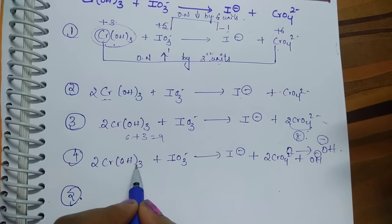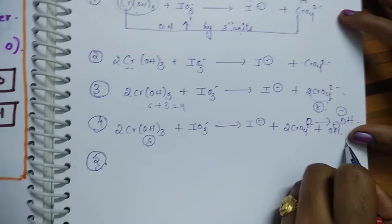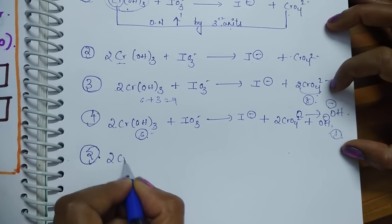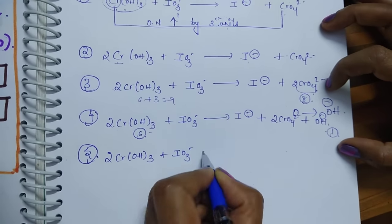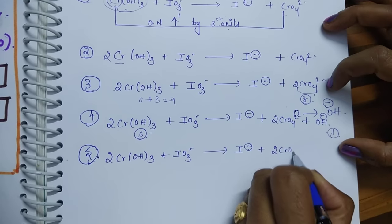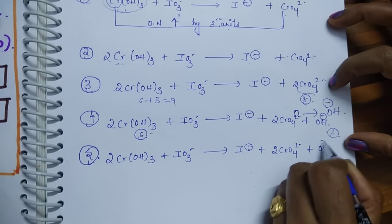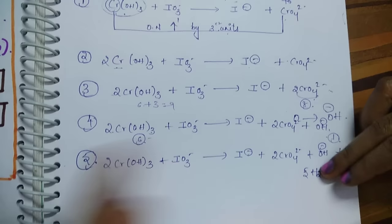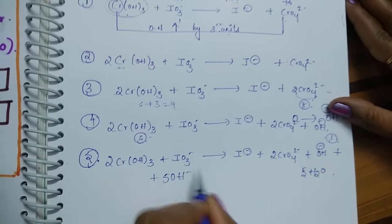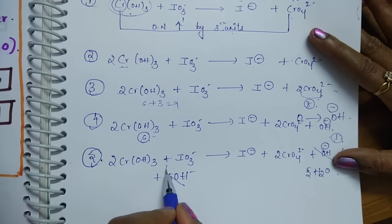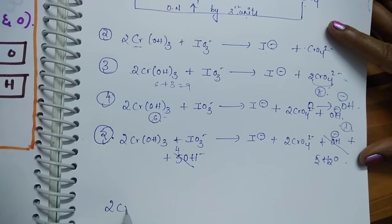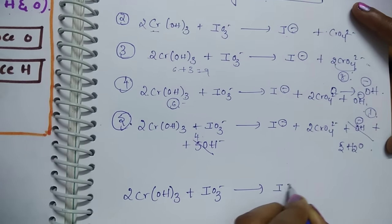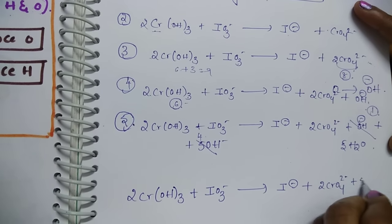Step five: balance hydrogen. On the left there are six hydrogens (from 2 × CrO₂⁻ giving 3 × 2 = 6), and on the right only one, so five hydrogens are deficient. Add five H₂O to the right-hand side. At the same time add five OH⁻ to the opposite (left-hand) side. One OH cancels from each side, leaving four OH⁻ on the left. The balanced equation is: 2 CrO₂⁻ + IO₃⁻ → I⁻ + 2 CrO₄²⁻ + 5 H₂O + 4 OH⁻... wait — final: 2 CrO₂⁻ + IO₃⁻ → I⁻ + 2 CrO₄²⁻ + 5 H₂O.